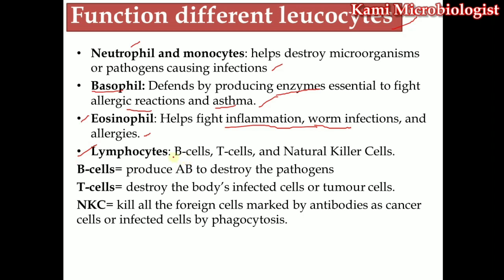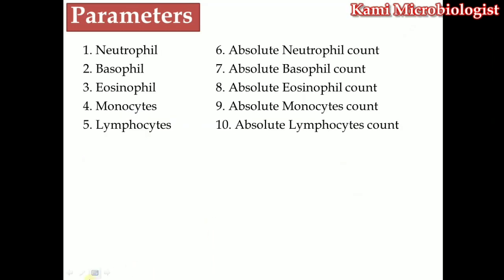Lymphocytes include three types of cells: B lymphocytes (B cells), T lymphocytes (T cells), and natural killer cells. B cells produce antibodies that destroy pathogens. T cells destroy infected cells or tumor cells. Natural killer cells mostly kill antibody-containing cells, cancer cells, and infected cells as well.